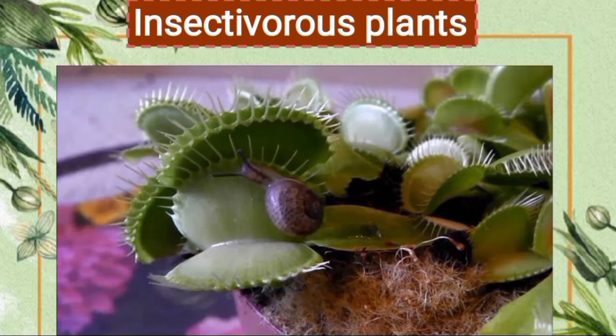Next is insectivorous plants. Like some animals, some plants are also carnivorous in nature. Their leaves are modified to trap insects, and hence they are called insectivorous plants.